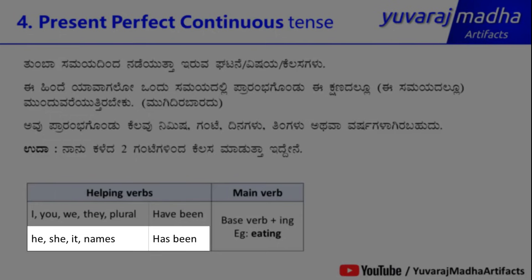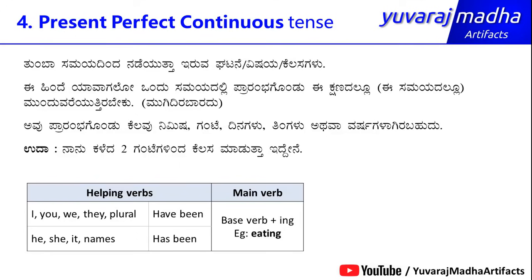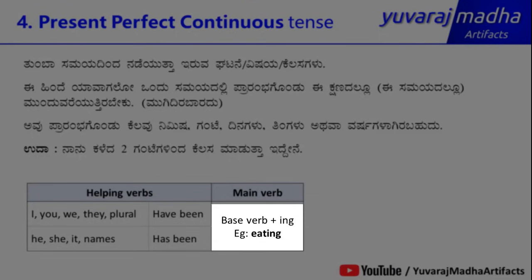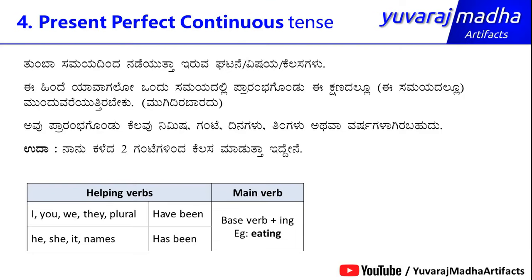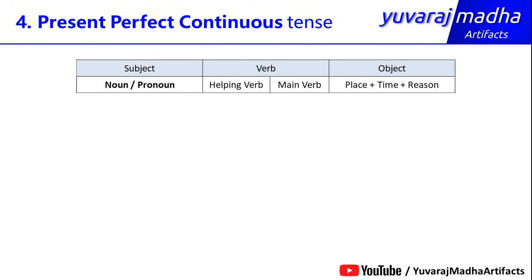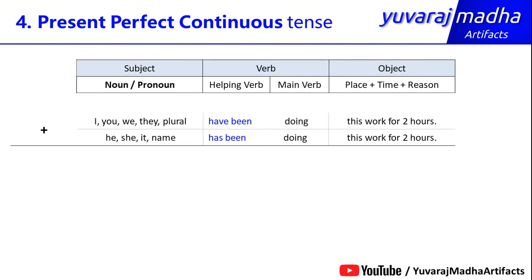For he, she, it, or a person's name, we use 'has been'. So the subject determines whether we use 'have been' or 'has been', followed by the main verb in the -ing form — for example, eating. The basic structure is: Subject + have/has been + verb-ing.